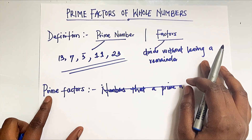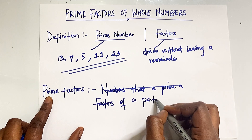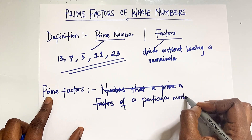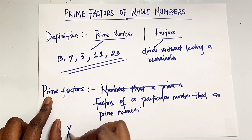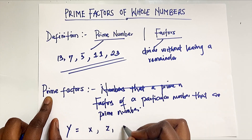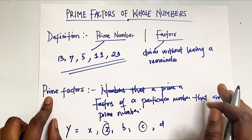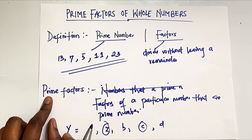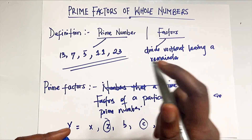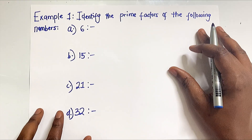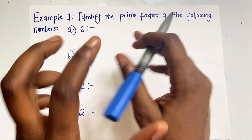So what are prime factors? We combine these two together: prime factors are simply factors of a particular number that are prime numbers. For example, if we have a number Y with factors X, Z, B, C, and A, not all of those factors would be prime numbers. Those that are prime — say Z and C — would be referred to as prime factors of Y. So you'll see questions like 'find the prime factors of certain numbers,' and that's exactly the kind of question we're going to tackle right now.